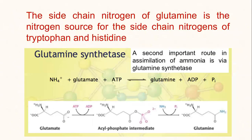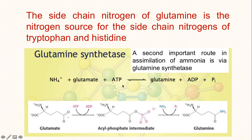The second important route for ammonia assimilation is via another enzyme system known as glutamine synthetase. Here, the side chain nitrogen of glutamine forms the nitrogen source for two important amino acids: tryptophan and histidine. The reaction proceeds as follows: ammonium and glutamate in the presence of ATP form glutamine. These are the two main routes through which ammonia is assimilated into amino acids.